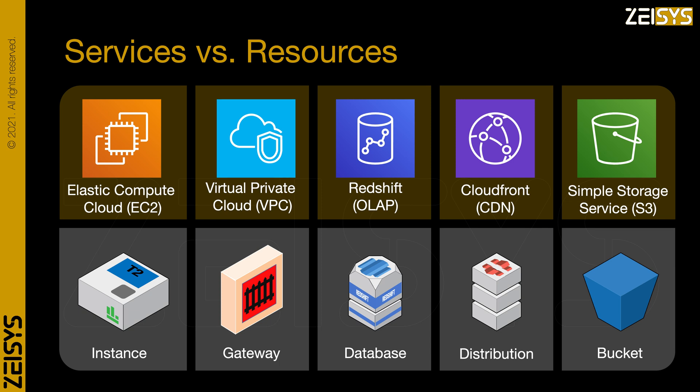EC2 service provides instances. VPC provides gateways, routers, and firewalls. Redshift provides databases. CloudFront provides distributions where you host content. S3 provides buckets for data storage.